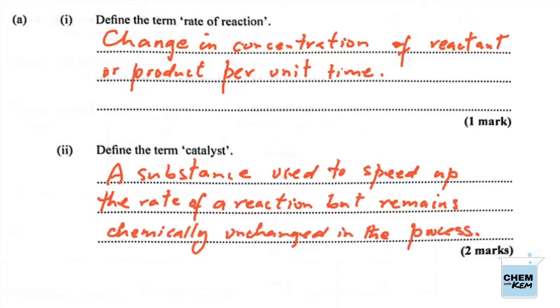The catalyst does not take part in the reaction — we could state that as well. A substance used to speed up the rate of a reaction but does not take part in the reaction. That will give us three marks.